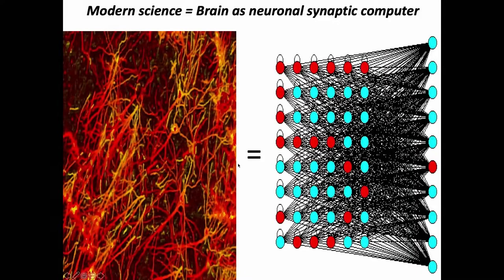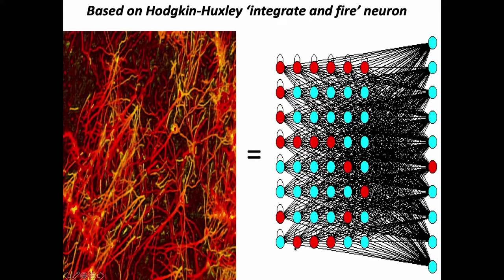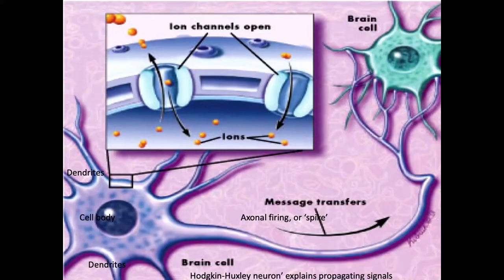Modern neuroscience, AI, generally think of the brain as a neuronal synaptic computer. On the left you see neurons interconnected by synapses; on the right, a computer matrix with nodes. This is generally how the brain is thought of, and it's all based on the Hodgkin-Huxley integrate-and-fire neuron, described in the 1950s by Hodgkin and Huxley.